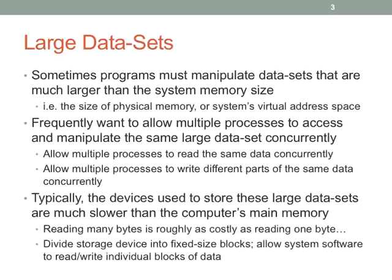Clearly this needs some kind of coordination before you end up in crazyville. Since devices are slow, we need to manage accesses as well. When I need to read a file, I'm doing I/O against a device that's extremely slow compared to how fast the processor goes. So I can block the process and unblock it later — the OS needs to be involved in managing that.